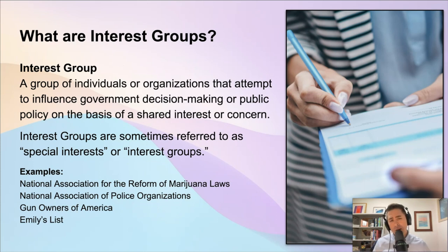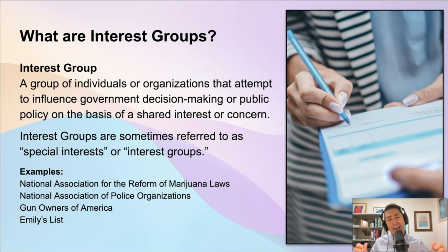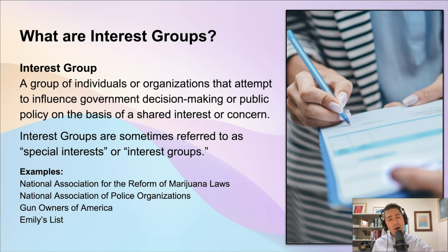Now let's go into describing interest groups. We already talked a little bit about factions and the fact that people join groups together. When we're talking about interest groups, we mean an organized group of individuals — or maybe even businesses or organizations — that come together with the goal of influencing government decision-making or policy, on the basis of some sort of similarity or shared interests that they have.